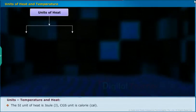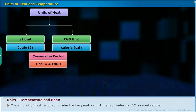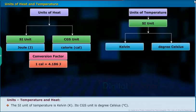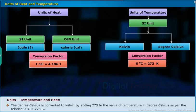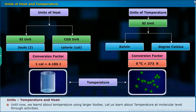The SI unit of heat is Joule; the CGS unit is calorie (cal). The amount of heat required to raise the temperature of one gram of water by one degree Celsius is called a calorie. One calorie is equal to 4.186 joules. The SI unit of temperature is Kelvin (K); it is also expressed in degree Celsius (°C). Degree Celsius is converted to Kelvin by adding 273 to the value in degree Celsius: 0°C = 273 K. Temperature in Kelvin (K) = 273 + temperature in Celsius.